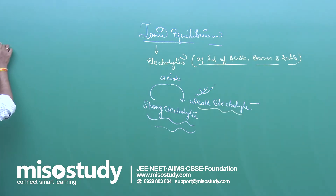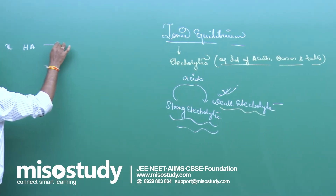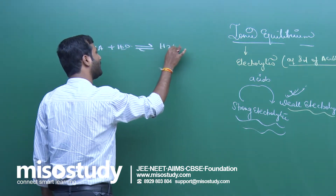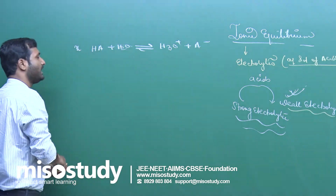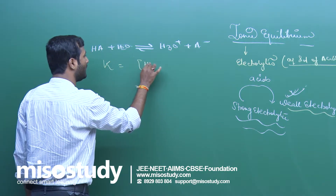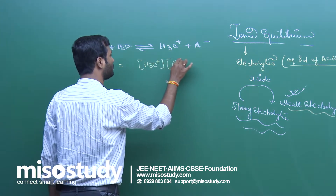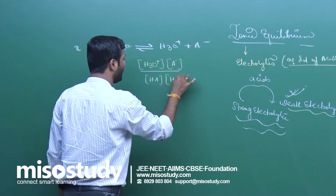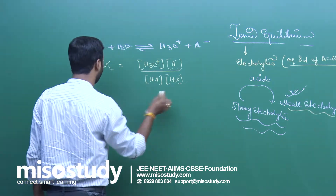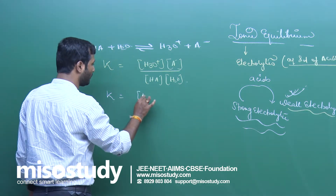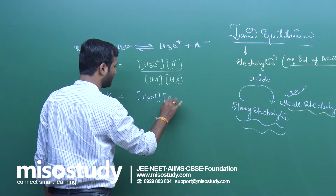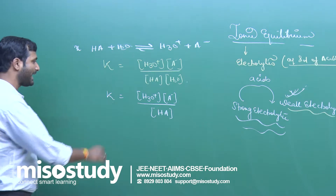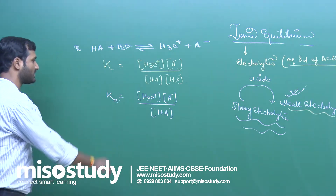Suppose I am taking an acid H A. It is H A plus H₂O, which gives you hydronium ion plus A minus — this is the behavior of acid. In this case, the equilibrium constant K will be equal to H₃O⁺ concentration times A⁻ concentration upon H A times H₂O. Since pure solid and pure liquid concentration are always taken as 1, K equals H₃O⁺ concentration times A⁻ concentration upon H A. H₃O⁺ means H⁺, so this equilibrium constant is represented as K A.